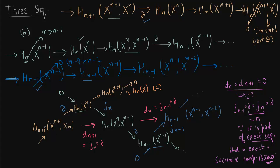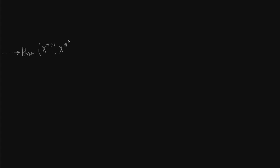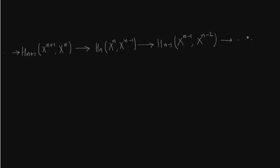We have constructed a new chain complex consisting of relative homology groups — this is important. Let us draw the CW complex sequence again on page 139, appending together what we wrote in the last slide. The horizontal row is a chain complex called the cellular chain complex of X. Each Hn(Xn, Xn-1) consists only of n-cells because we are modding out the (n-1)-cells.